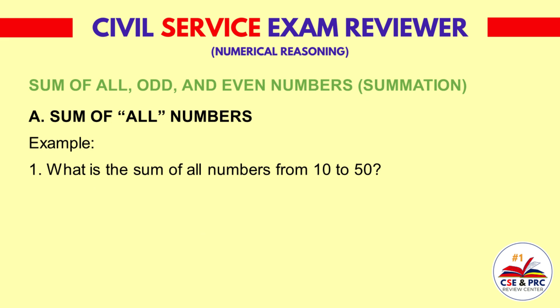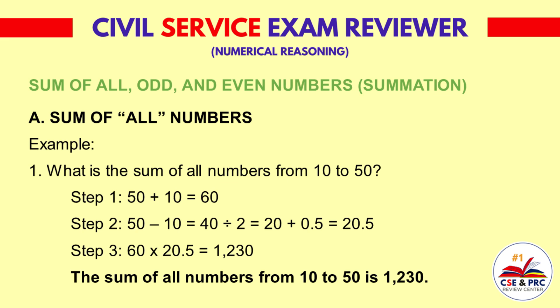Example 1: What is the sum of all numbers from 10 to 50? Step 1: Add the biggest number and the smallest number — 50 plus 10 is equal to 60. Step 2: Subtract the biggest from the smallest, divide by 2, then add 0.5 — 50 minus 10 equals 40, divided by 2 equals 20, plus 0.5 equals 20.5. Step 3: Multiply the results — 60 times 20.5 is equal to 1230. The sum of all numbers from 10 to 50 is 1230.